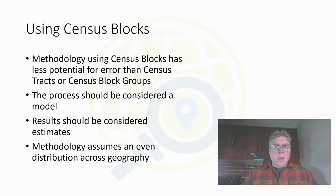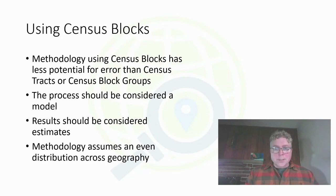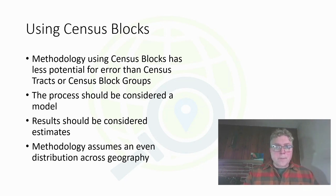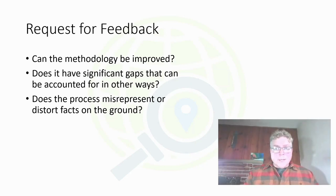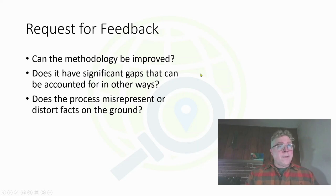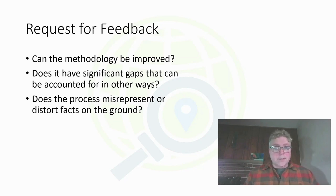To bring some of these points home: we like using census blocks because the methodology is more accurate and has less potential for error than using census tracts or block groups. It is important to note that the process should still be considered a model, and the results should therefore still be considered estimates. The methodology assumes an even distribution across the geography, which is actually not the case — but that is a weakness in this model. We're also interested in feedback from viewers on whether the methodology can be improved, whether there are significant gaps, whether it misrepresents facts on the ground, or whether it is culturally sensitive.